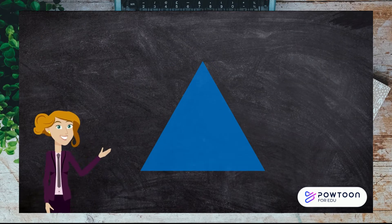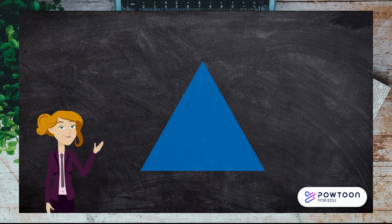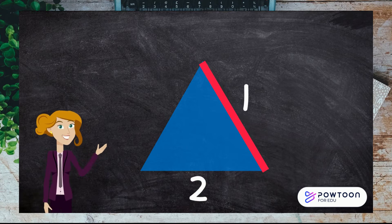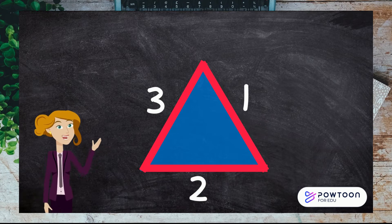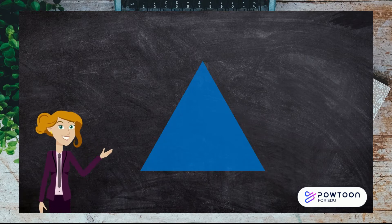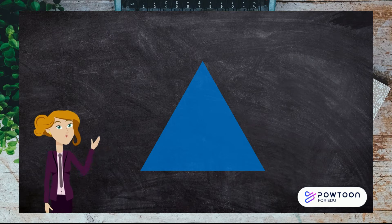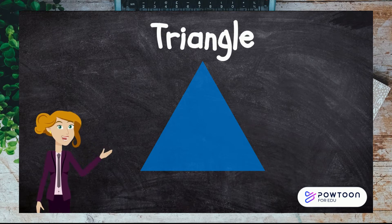The next shape has three sides — one, two, three. Do you know what it's called? Yes, it's a triangle.